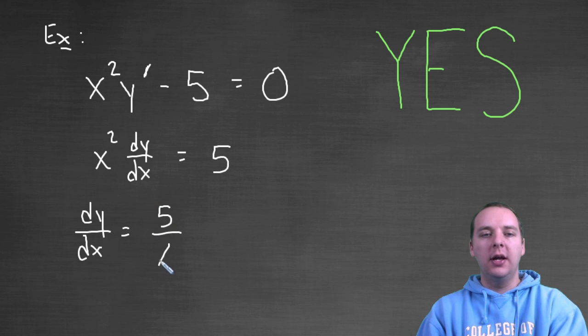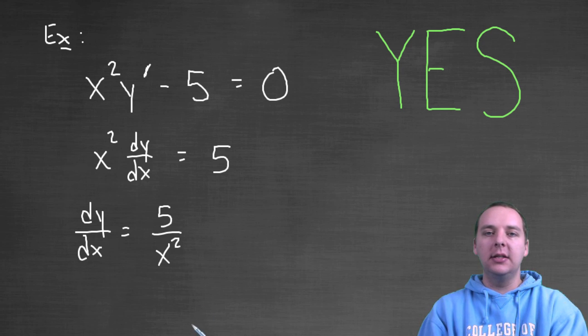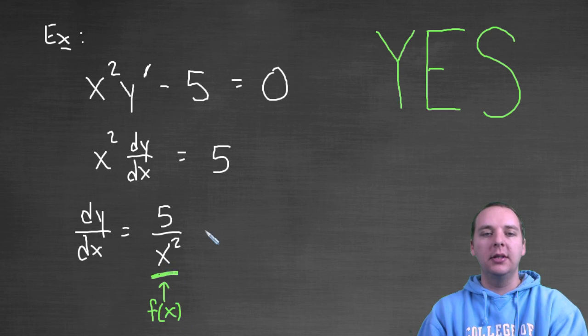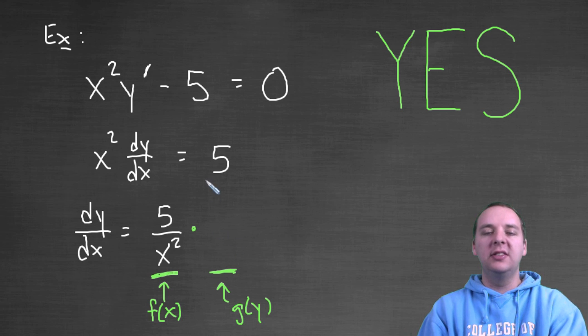So the question is, does this count as being separable? And I claim that it does. Here's my justification for that: this is clearly a function of x, no doubt that's pretty obvious. But what about the function of y? Somebody would say, "Well Devin, there's no y here. How can you say that this is separable?"